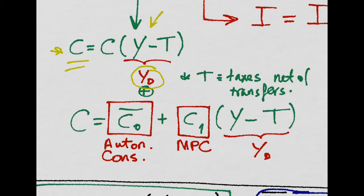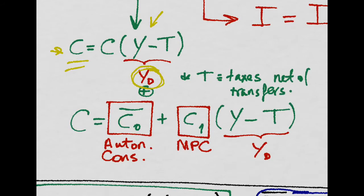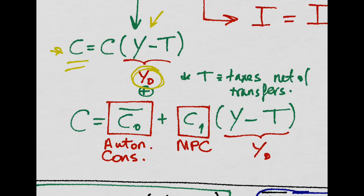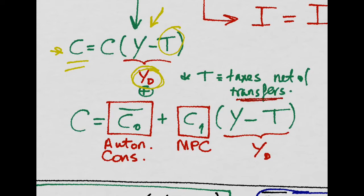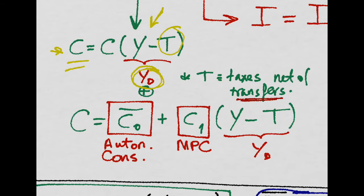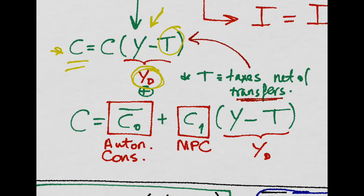Consumption is a function of disposable income. This disposable income of households is the income they receive from firms minus the taxes they pay to the government. This is not exactly true because they also receive some transfers from the government—social benefits, whatever. But that is already included in this T. This T is taxes minus transfers, and that reduces income to get disposable income.